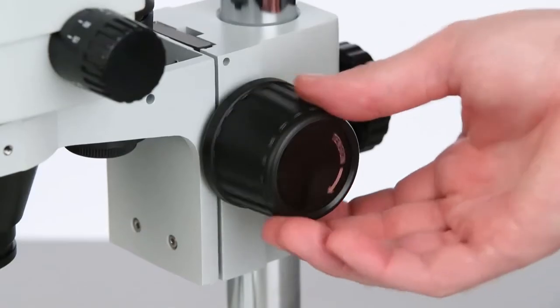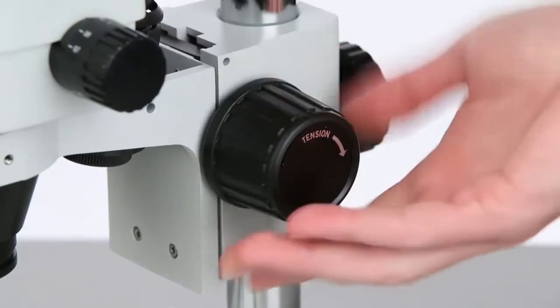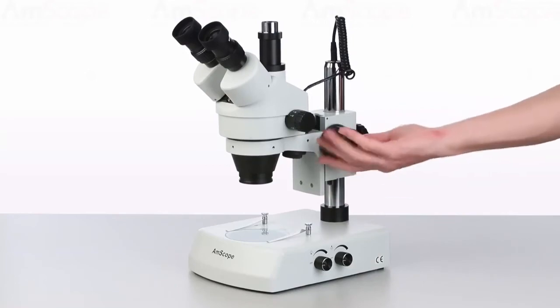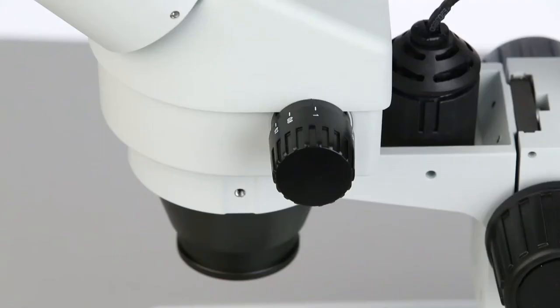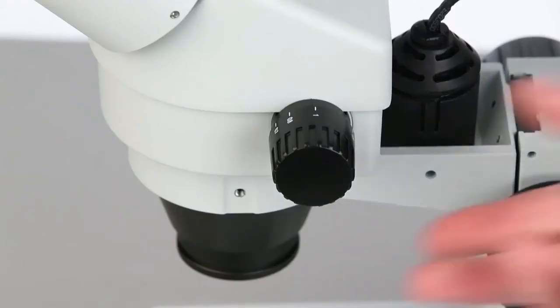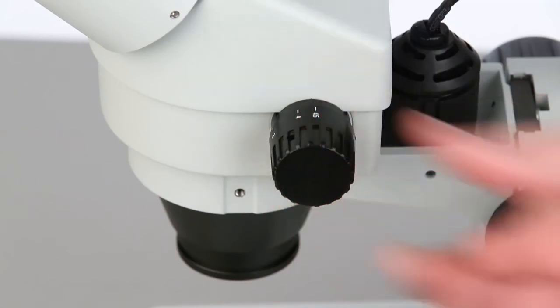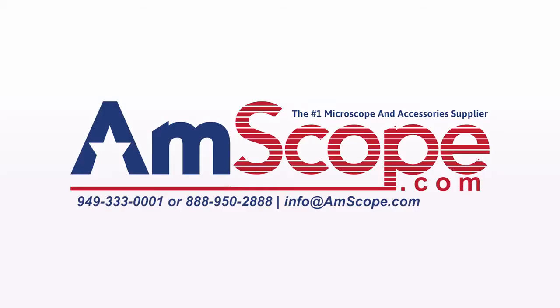There is an adjustment knob on either side of the microscope to control your fine focus. The calibrated knobs on either side of the head control the zoom from 0.7x to 4.5x magnification.